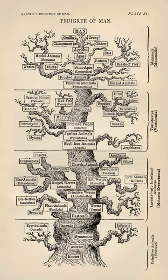The observation that living things inherit traits from their parents has been used since prehistoric times to improve crop plants and animals through selective breeding. The modern science of genetics, seeking to understand this process, began with the work of the Augustinian friar Gregor Mendel in the mid-19th century.